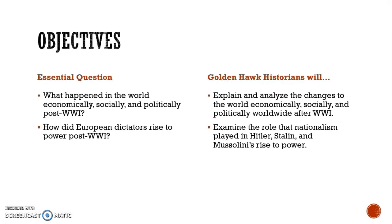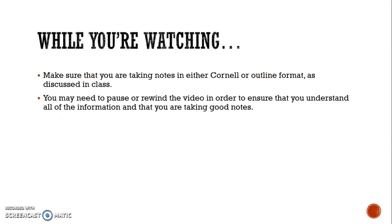Golden Hawk historians will explain and analyze the changes to the world economically, socially, and politically worldwide after World War I, and examine the role that nationalism played in Hitler, Stalin, and Mussolini's rise to power. While you're watching, make sure that you're taking notes in either Cornell or Outline format. It's okay if you have to pause or rewind the video to make sure that you're taking good notes.